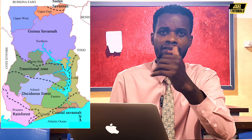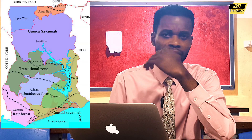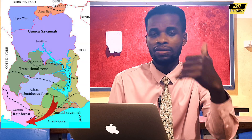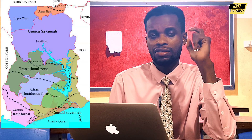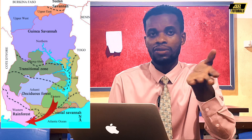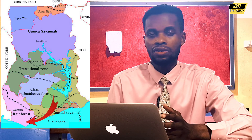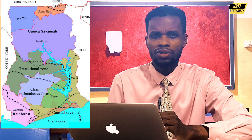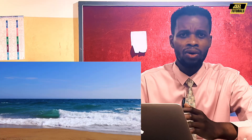The southwestern equatorial region covers areas like Axim and areas around Ghana's coast at the border. You can see that it is closer to and shares borders with the coast — and that coast is the Gulf of Guinea and the Atlantic Ocean.